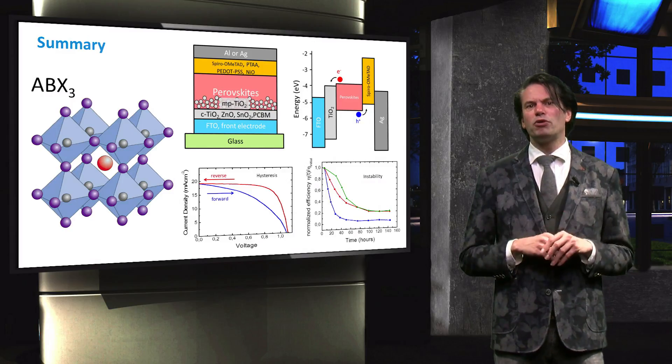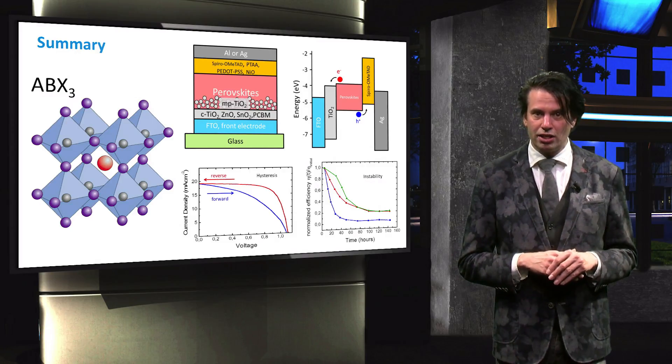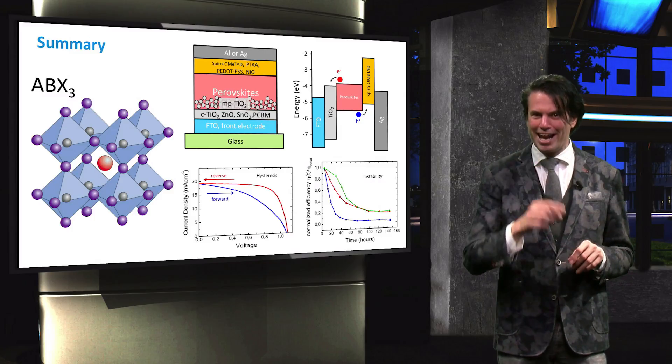Record efficiencies on lab scale up to 22% have been demonstrated. Next week we will look at the application of perovskites as top cell in combination with a crystalline silicon solar cell in a so-called tandem solar cell. So, see you next week!